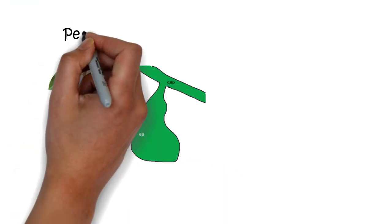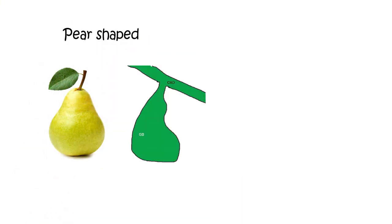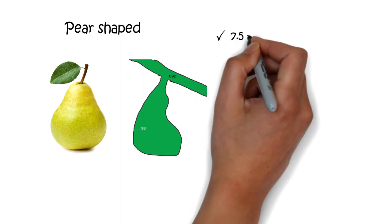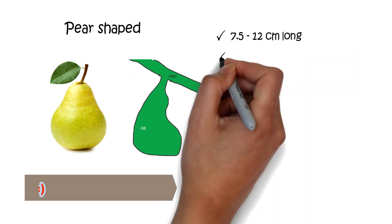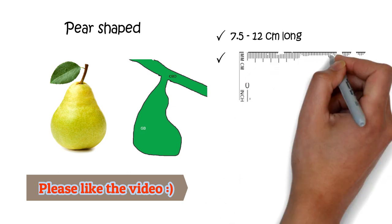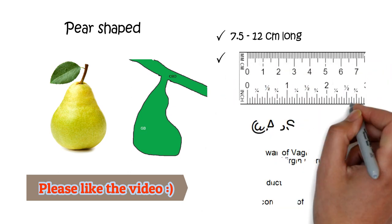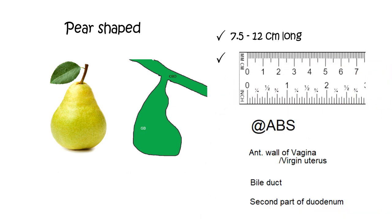The shape of the gallbladder is pear-shaped, and it is around 7.5–12 cm long. Other structures that are 7.5 cm long can be remembered by the mnemonic ABS: A means the internal wall of the vagina or virgin uterus, B means bile duct, and S means the second part of the duodenum.